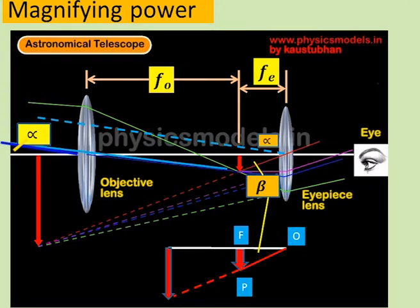Now, let's draw a parallel dotted line passing through the center of the eyepiece lens. You can see a blue dotted line that's forming the same alpha as formed at the objective lens.